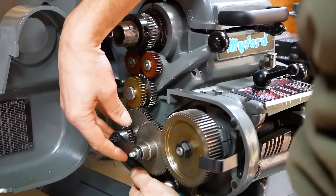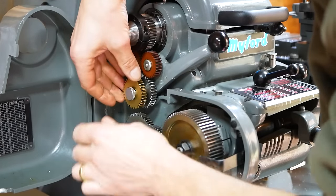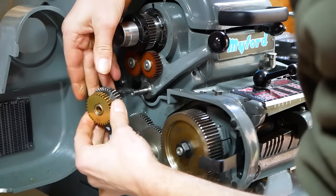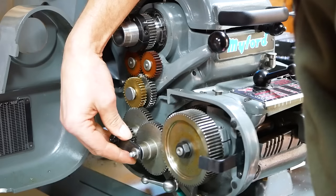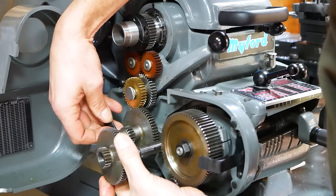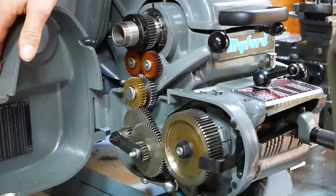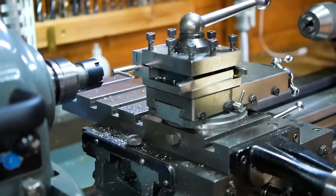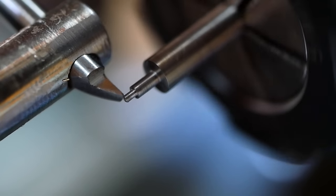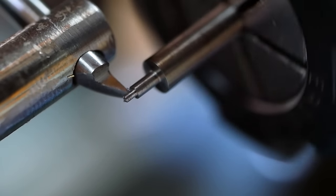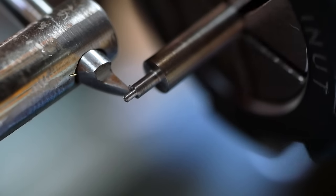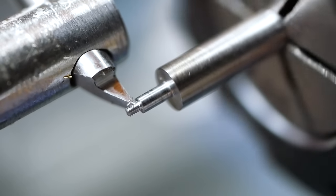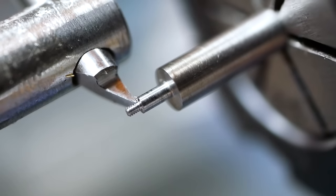To set up for screw cutting Alistair adjusts the gears connecting the spindle to the lead screw and sets the gearbox accordingly. As far as we can tell the screw cut thread comes out perfectly. To finish the screw from here the same methods as we used previously would be employed.